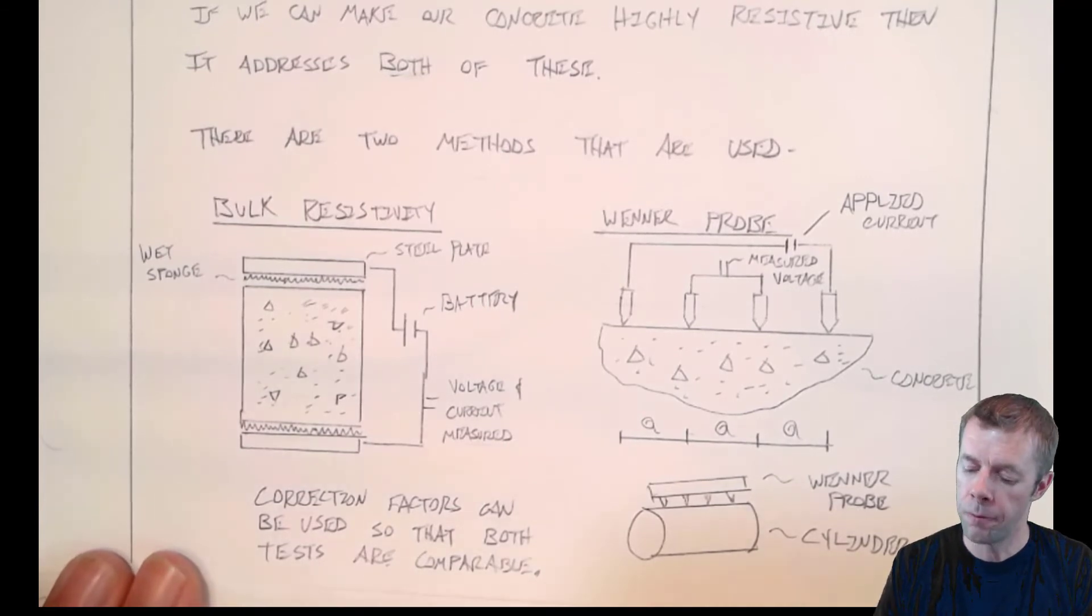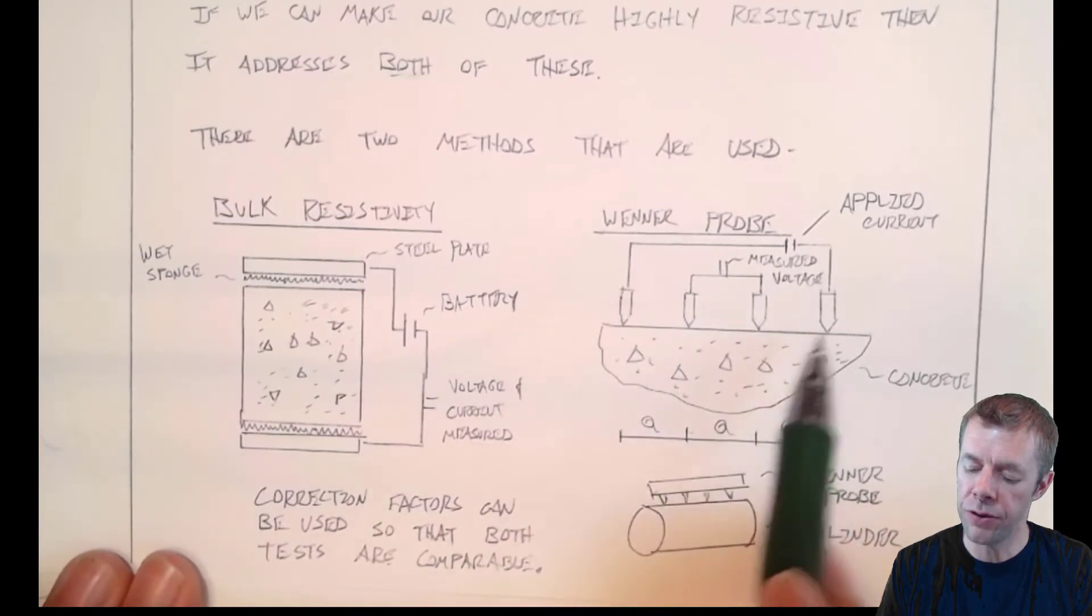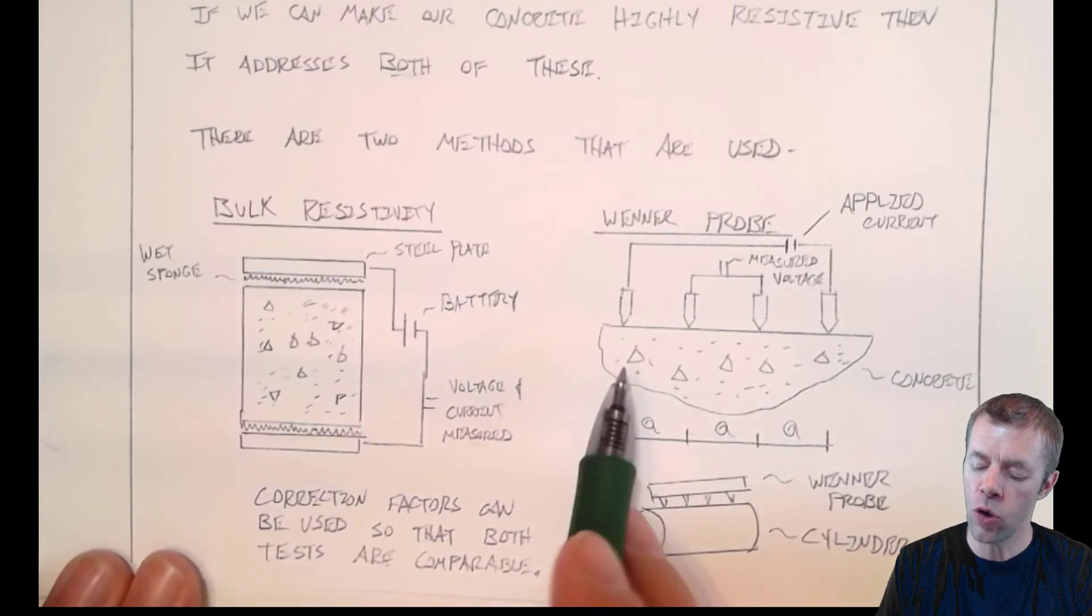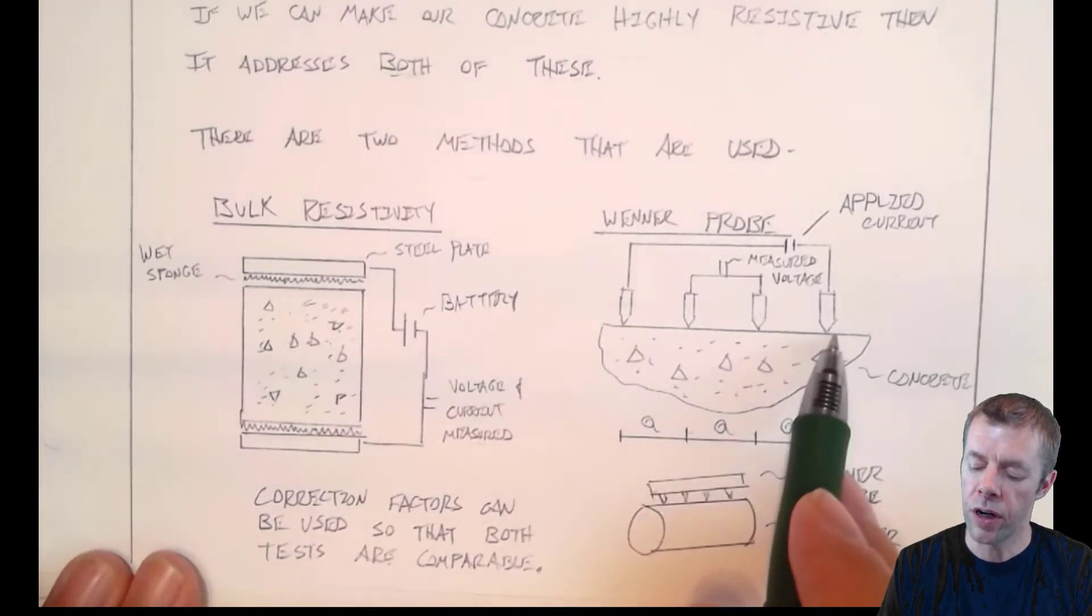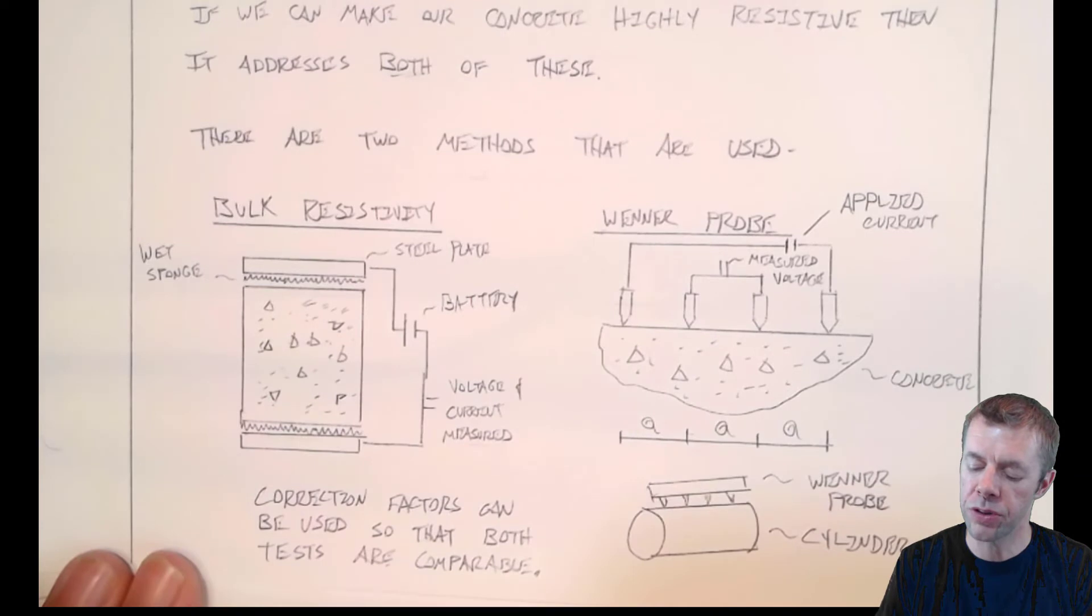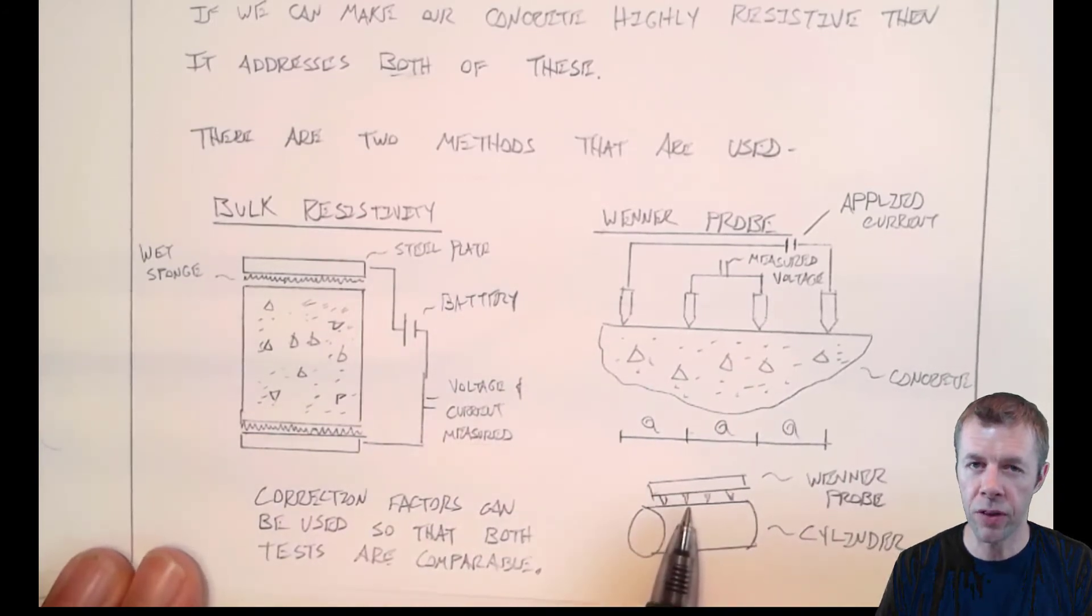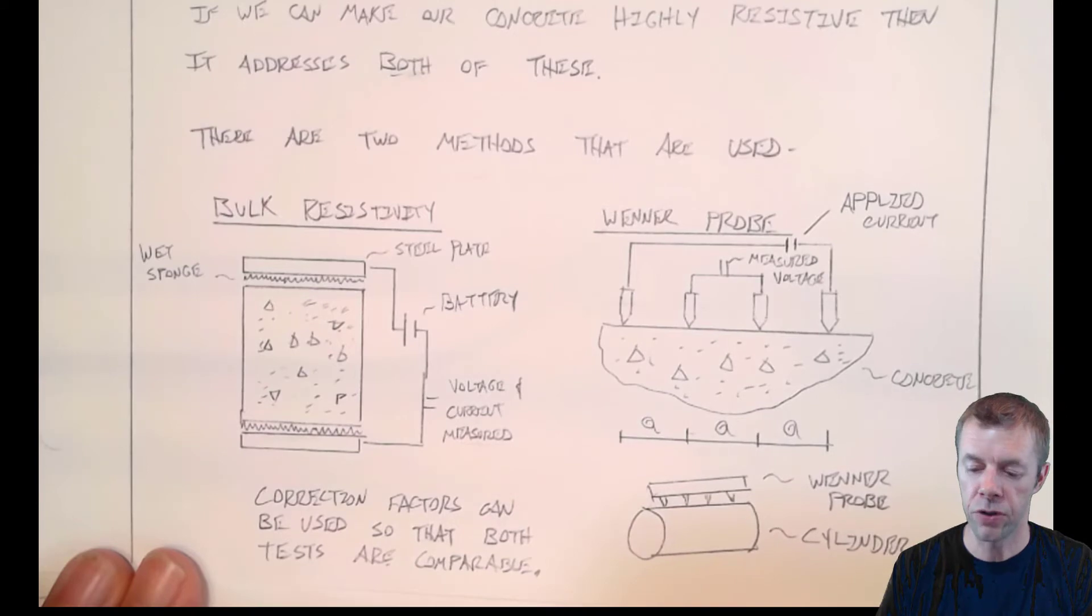The winter probe is where you apply current on the outsides, and you measure the voltage on the inside. The idea is that you apply a current from one to the other, and you measure the resistance across the middle. All these are typically spaced at a constant spacing across the concrete. You touch the tip of these to the concrete, and this is usually a handheld device that looks something like this. And you measure the surface, typically a concrete cylinder. Although you could do a beam, or you could do something else.